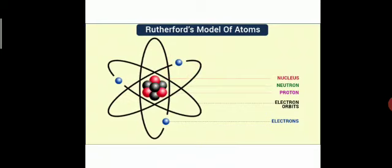If electrons are continuously revolving around the nucleus, at some point they should lose energy. For example, if you are asked to run 20 rounds in 50 minutes, the first 10 rounds you complete quickly, but as you continue you lose energy and eventually fall. The same should happen to an electron — since it is in continuous motion, at some point it must lose energy and fall into the nucleus.